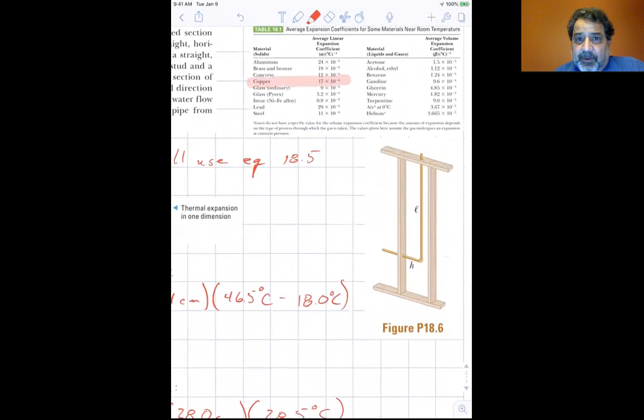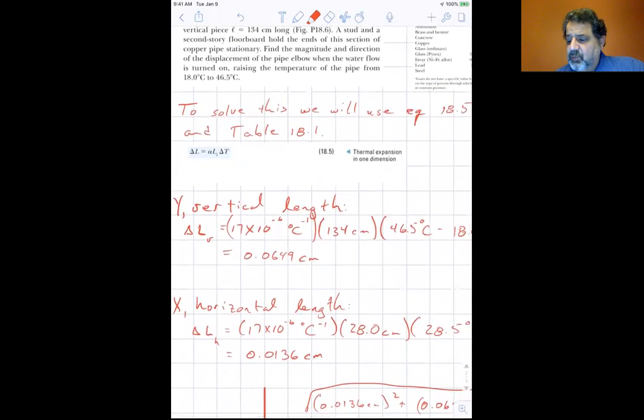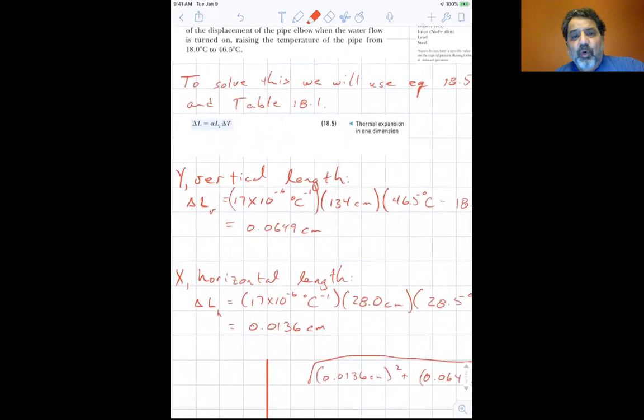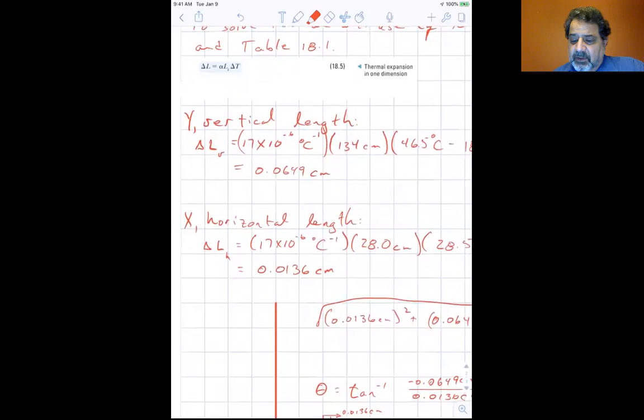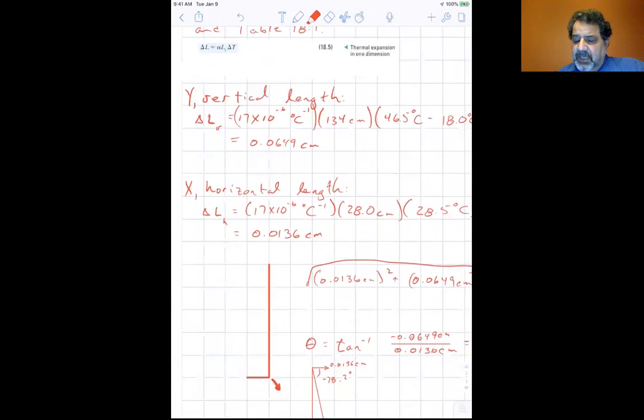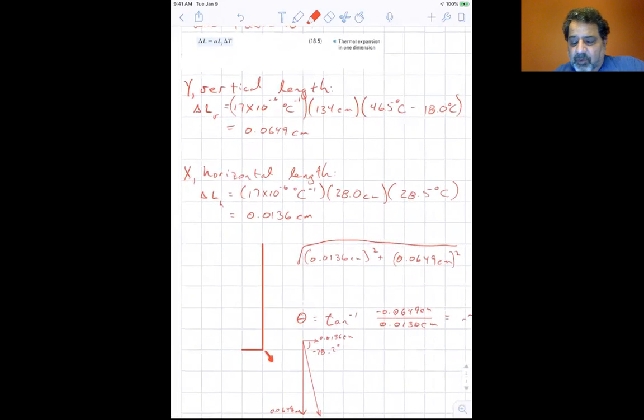Well, we have to turn over here to our average expansion. It's copper. We look at copper and that's this one right here. Copper is 17 times 10 to the minus 6 per degree C. That's the alpha, the average linear expansion coefficient. So let's look and see how we attack the problem. To solve this, we will use equation 18.5 and table 18.1. Now for the vertical length, the Y, the vertical length delta L, delta L V for vertical is equal to 17 times 10 to the minus 6 inverse degree C times 134 centimeters times 46.5 C minus 18.0 degrees C. And if you multiply all that out, you get 0.0649 centimeters.